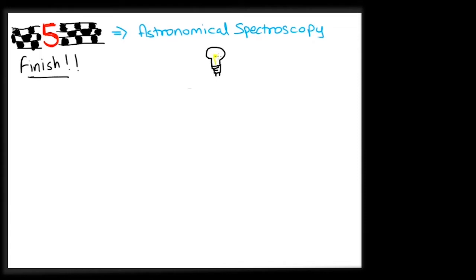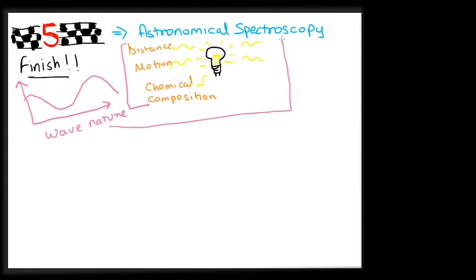This is the fifth and the last video in my series where we talk about astronomical spectroscopy and learn how light acts as the messenger of the universe. Till now, through the previous videos, I have explained the wave nature of light, the spectrum and their use to calculate distances, motion and chemical composition of celestial bodies. The study of spectrum is called spectroscopy.